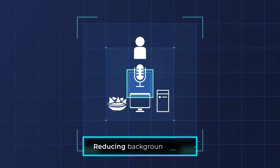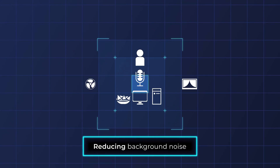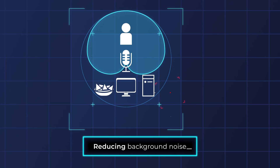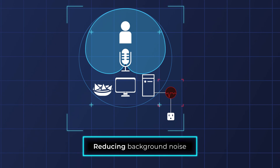Even with the best microphone, you'll still have to make sure to reduce background and electrical noise. For background noise, make sure your microphone is placed in a manner where the polar pattern is directed towards your voice. Try to avoid noise entering this area. Electrical noise tends to come from ground loops, which can result in a buzzing or humming type sound in your stream audio.